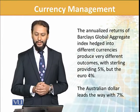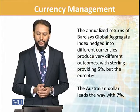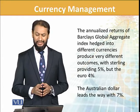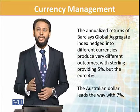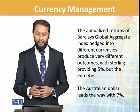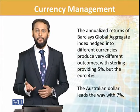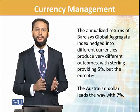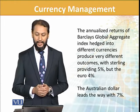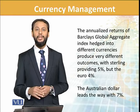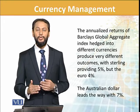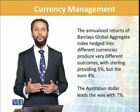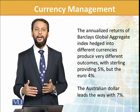The annualized return of Barclays Global Aggregate Index hedged into different currencies produces very different outcomes. With sterling it provides 5%, but the euro 4%. Yeh impact hedged currencies ka hi baat ho rahi hai — ke currencies ke against unka kya impact hai. And Australian dollar leads the way with 7%. So even with hedging, you can see variation and the impacts are different.